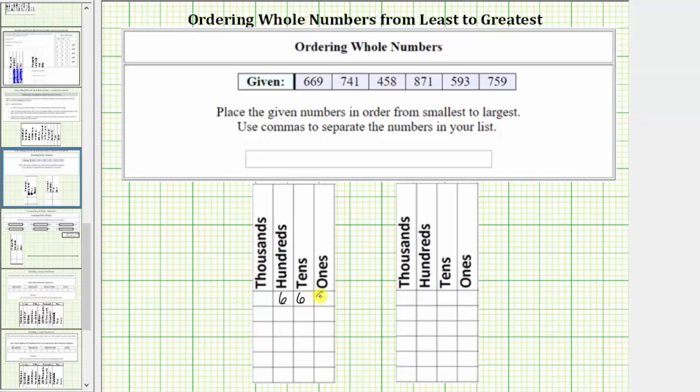We have 669, 741, 458, 871, 593, and 671.